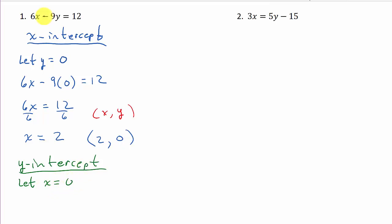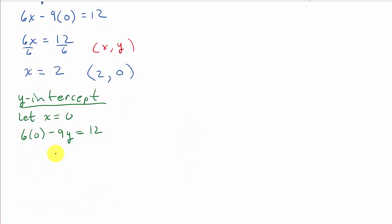And I'm going to plug the 0 in the equation and solve for y. So that's going to be 6 times 0 minus 9y equals 12. And so that's going to give me negative 9y equals 12 because this term goes to 0. And then I'll divide everything by negative 9.